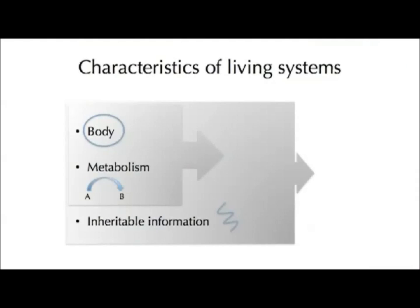Life also has a kind of inheritable information. We as humans store our information as DNA in our genomes and we pass this information on to our offspring. If we couple the first two — the body and metabolism — we can come up with a system that could perhaps move and replicate.